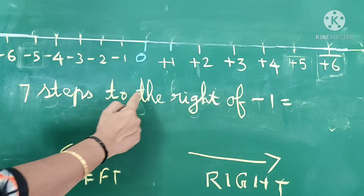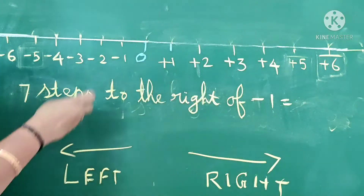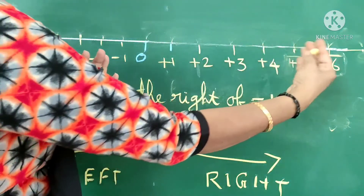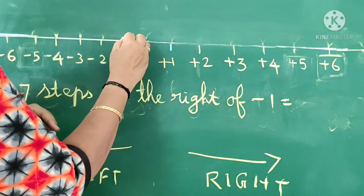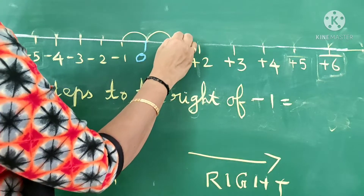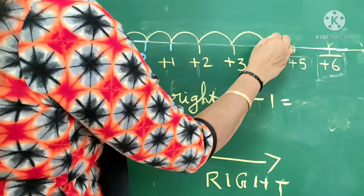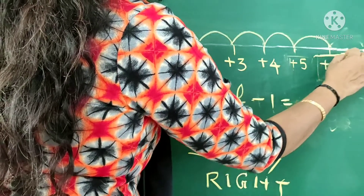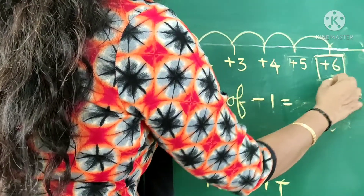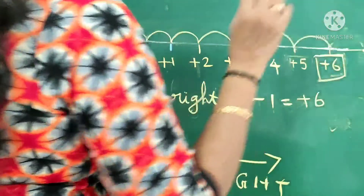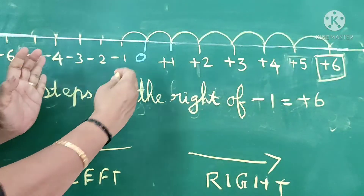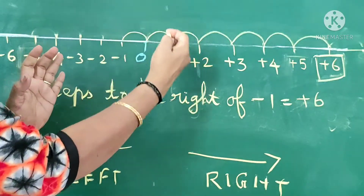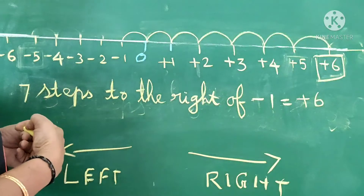Now, 7 steps to the right of minus 1. Minus 1 is here, that is negative 1. We are going to move 7 steps to the right. Counting 1, 2, 3, 4, 5, 6, and 7 — we are getting positive 6. The answer is positive 6. 7 steps to the right of minus 1: start from minus 1, move 7 steps, and we get positive 6.